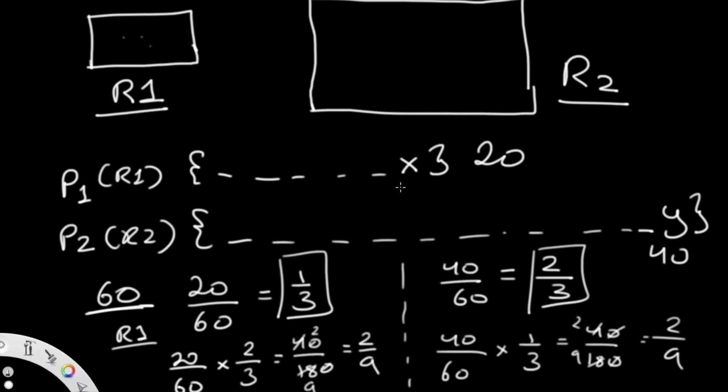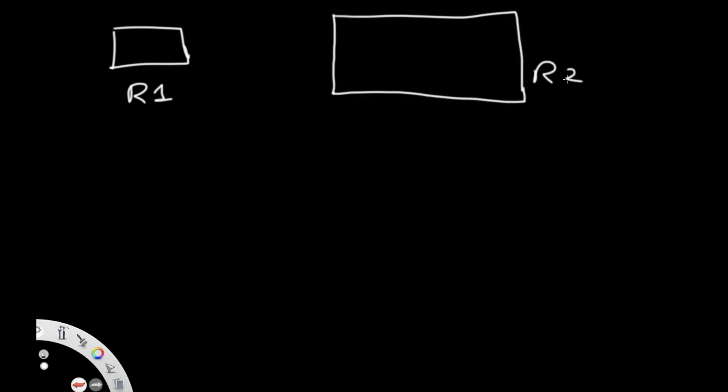I'm going to start off by drawing two very basic rectangles. I'll call this one R1. The whole point is to show you why one method is actually not valid. This is rectangle one and this is rectangle two, and what I want to show is that R2 is clearly bigger than R1.